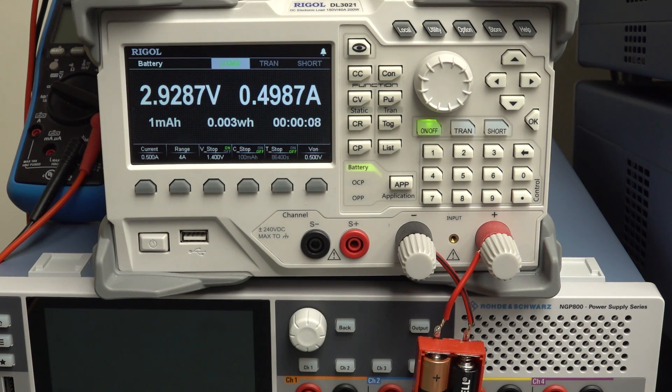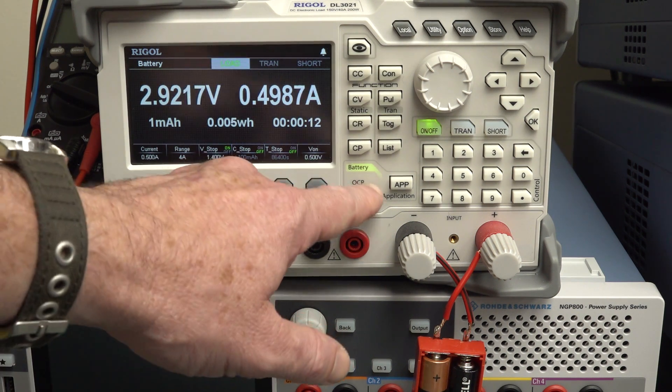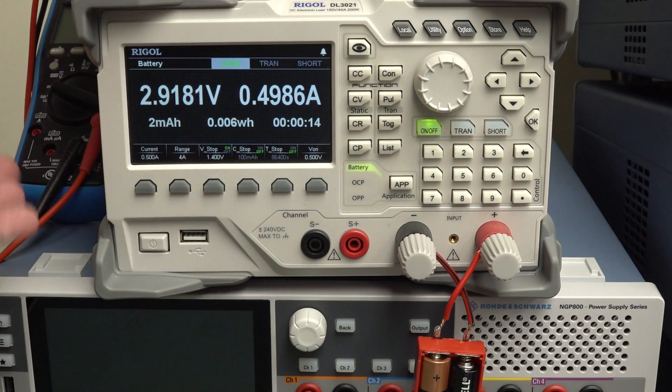And that could take a while. One milliamp hour total. And the good thing about this, the battery capacity app here, is that it just switches off when it gets to 1.4 and tells you the total capacity and the total time. Fantastic.